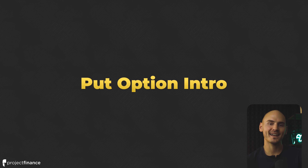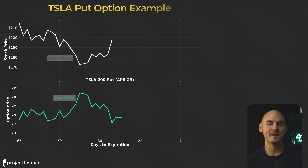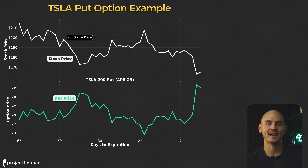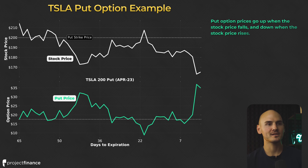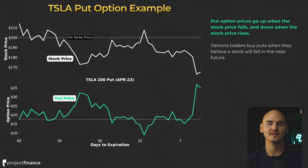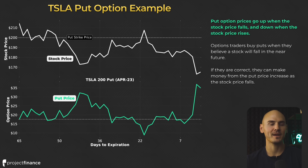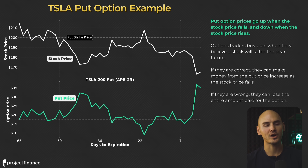Let's flip the script and talk about put options. In this example, we are looking at a put option again on Tesla. Put option prices go up when the stock price falls and go down when the stock price rises. So put options move inversely to the stock price, whereas call options move with the direction of the stock price. Options traders buy puts when they believe a stock will fall in the near future. If they are correct, they can make money from the put price increase as the stock price falls. And if they are wrong, they can lose the entire amount paid for the option.